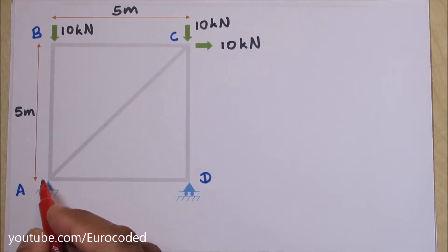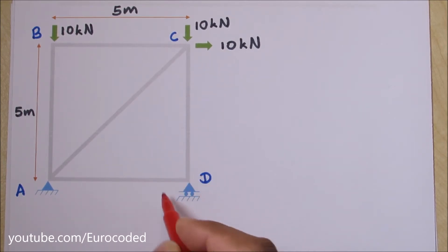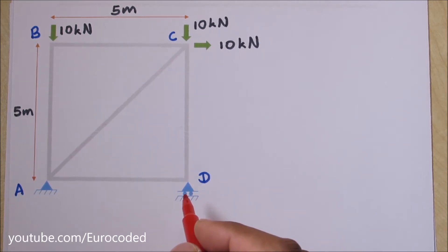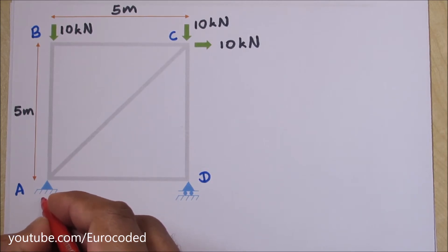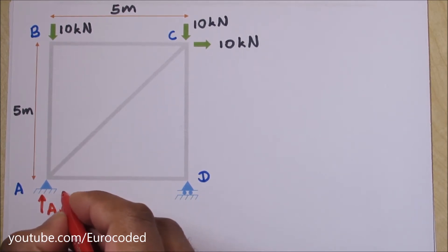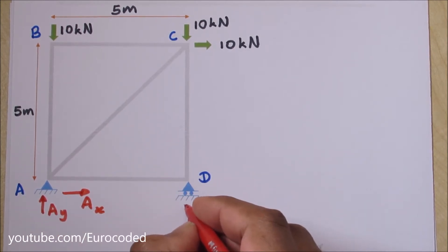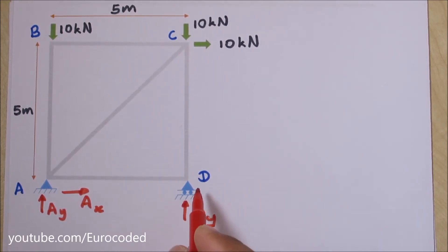We have a fixed support at A and a horizontal roller support at D. If you would like to know about the different types of supports, we have covered that topic in a different video — I'll put a link down below. We have a vertical reaction AY, a horizontal reaction AX, and another vertical reaction DY, but no horizontal reaction at D because of the horizontal roller support.